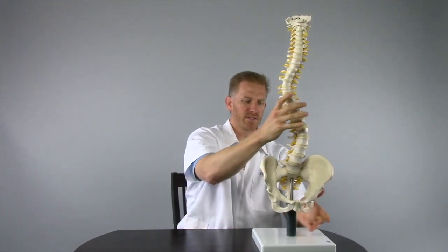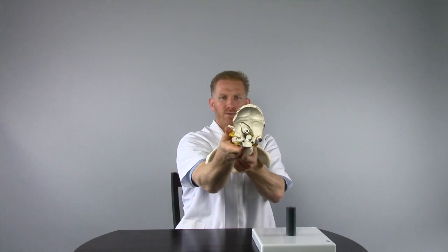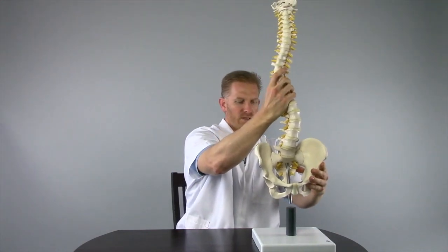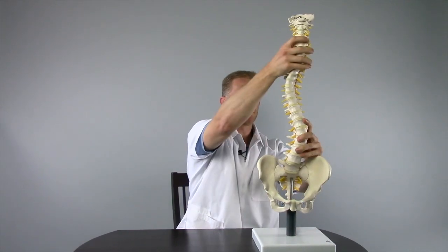If you were to look at it straight on, you might see the twist a little better like this. So again, in the coronal plane whereas it should be straight, a scoliosis will have a bend.